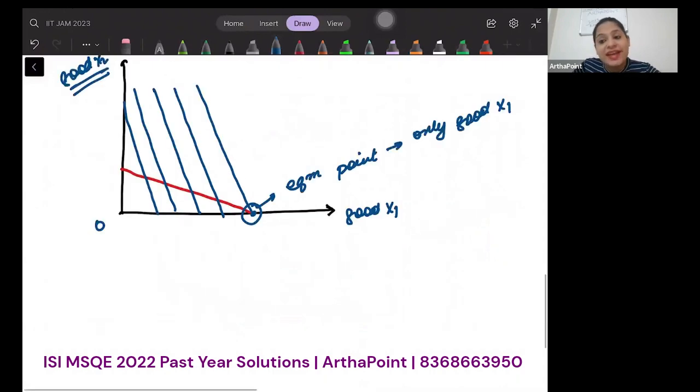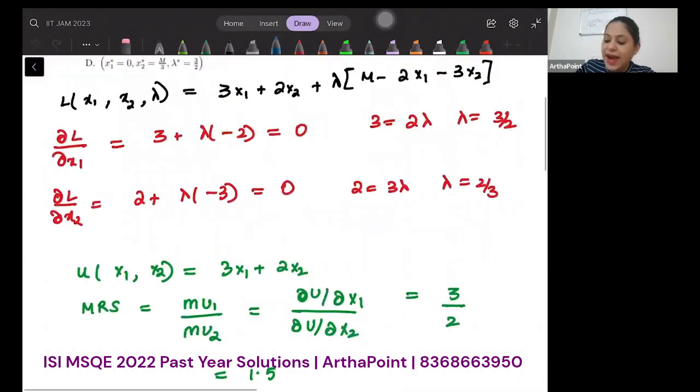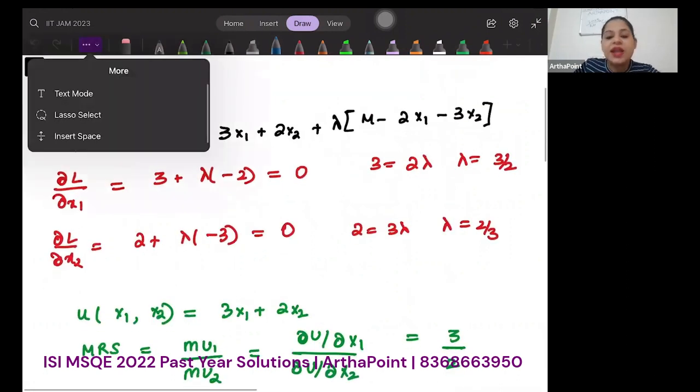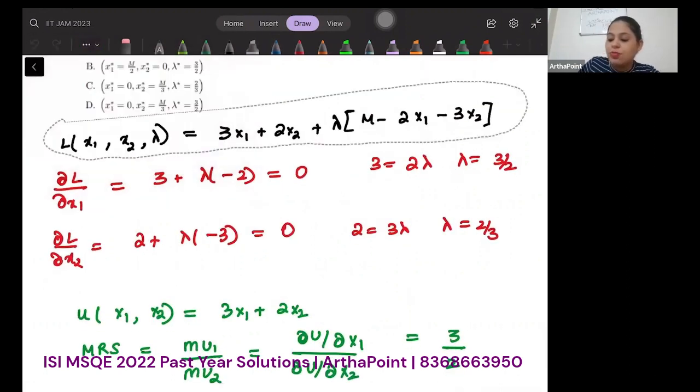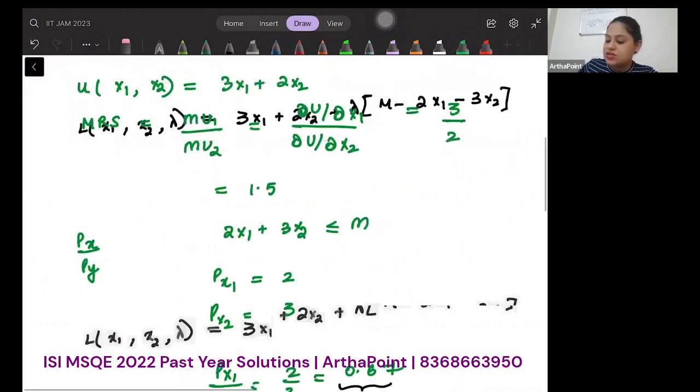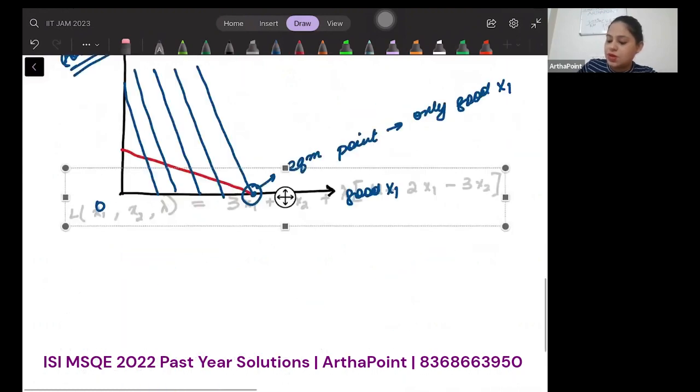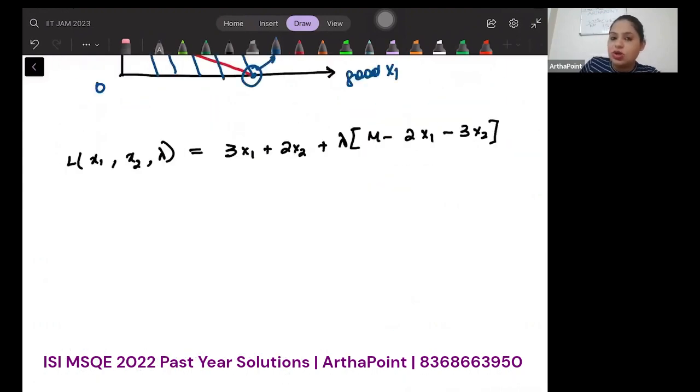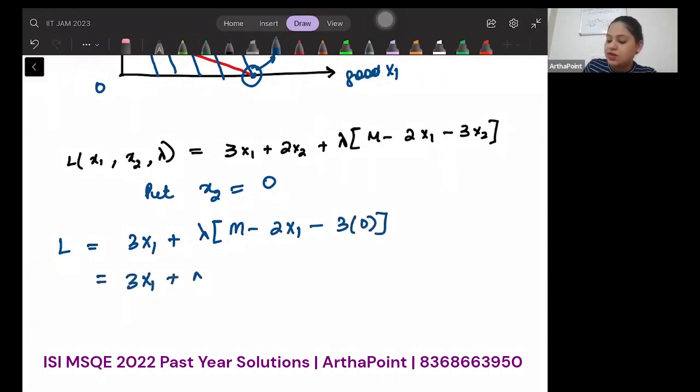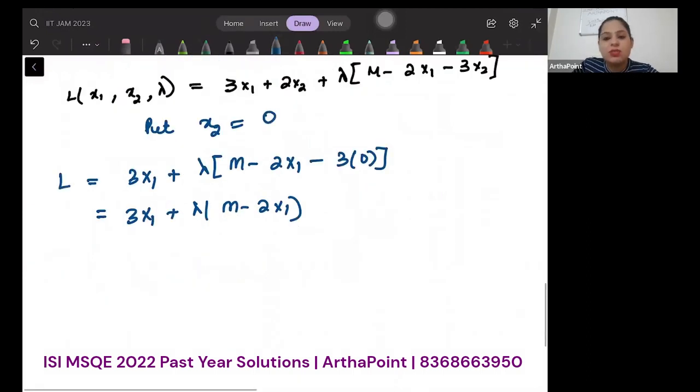Now I know that x2 is 0. So I am going to go back to my Lagrange and resolve it, putting x2 as 0. My Lagrange will be 3x1 plus lambda(m minus 2x1 minus 3 into 0). So this is going to be 3x1 plus lambda(m minus 2x1). This is what my Lagrange will be.